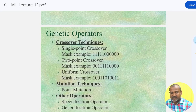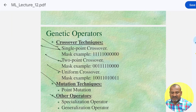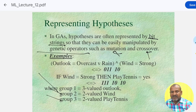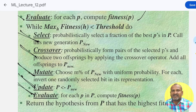The genetic operators include: crossover techniques — single point crossover, two point crossover, and uniform crossover — and mutation techniques including point mutation. Other operators are specialization operators and generalization operators. Using all of these operators we represent the hypothesis. The five major functionalities are selection, crossover, mutate, update, and evaluate. This is the overview of genetic algorithms.